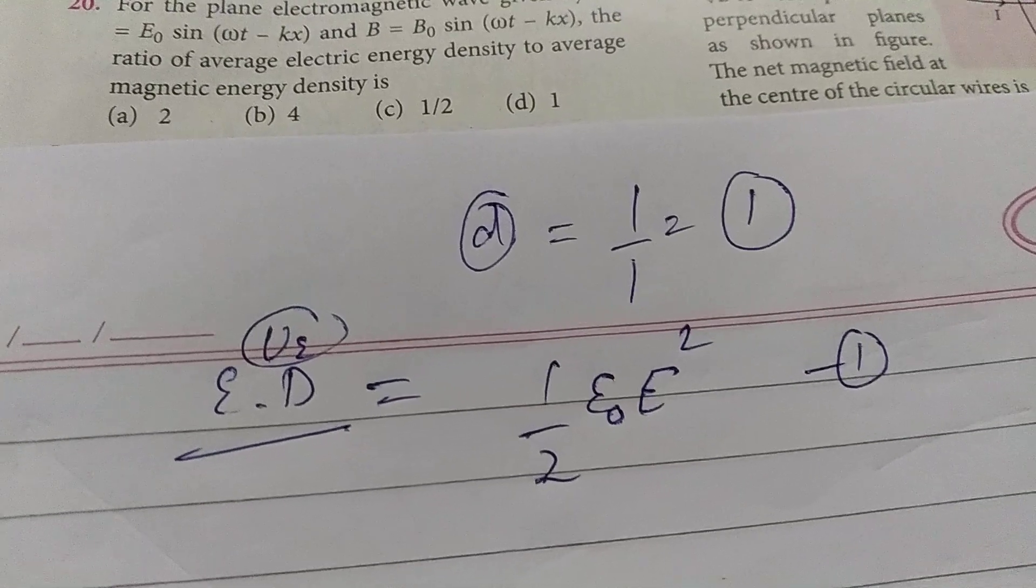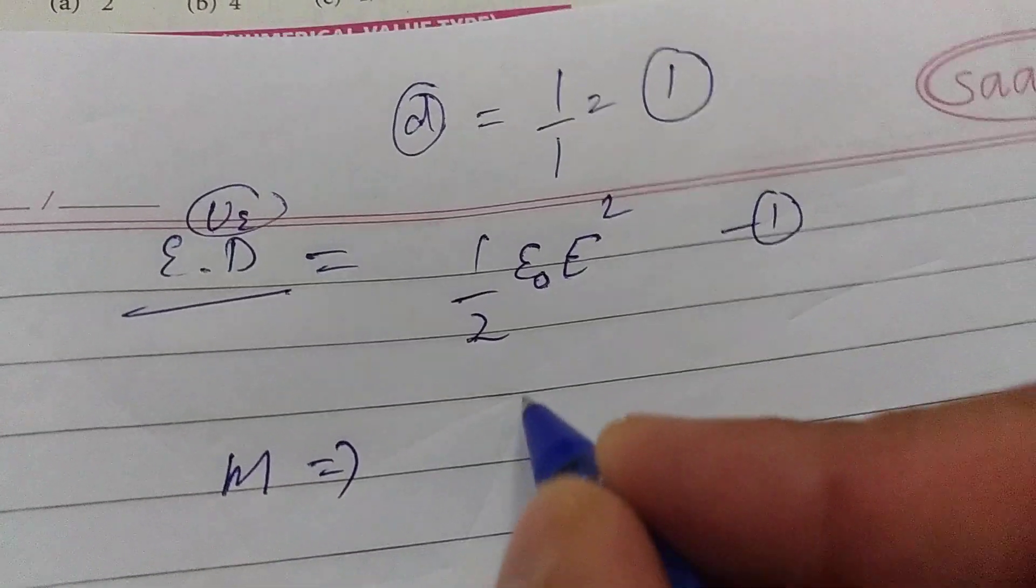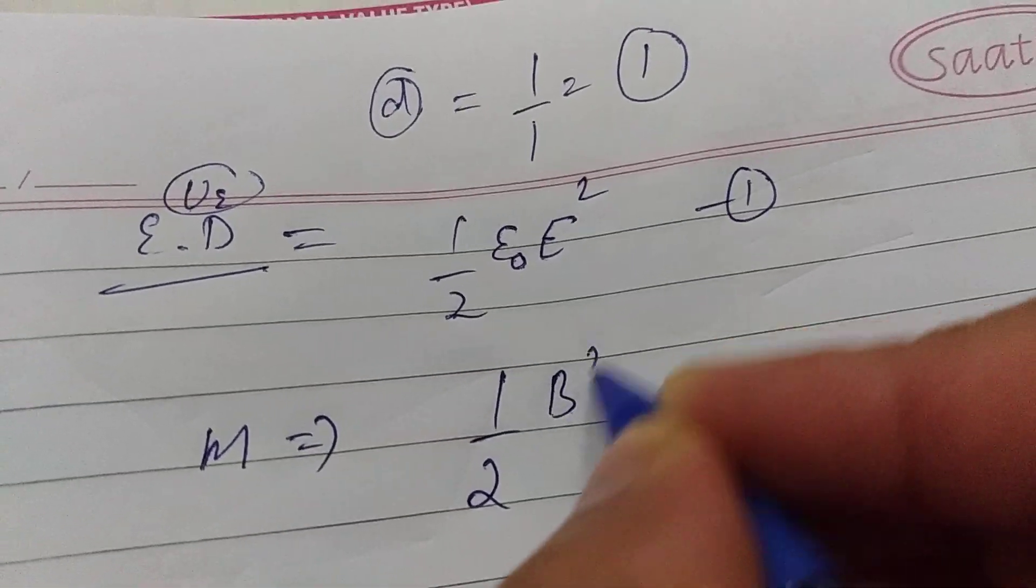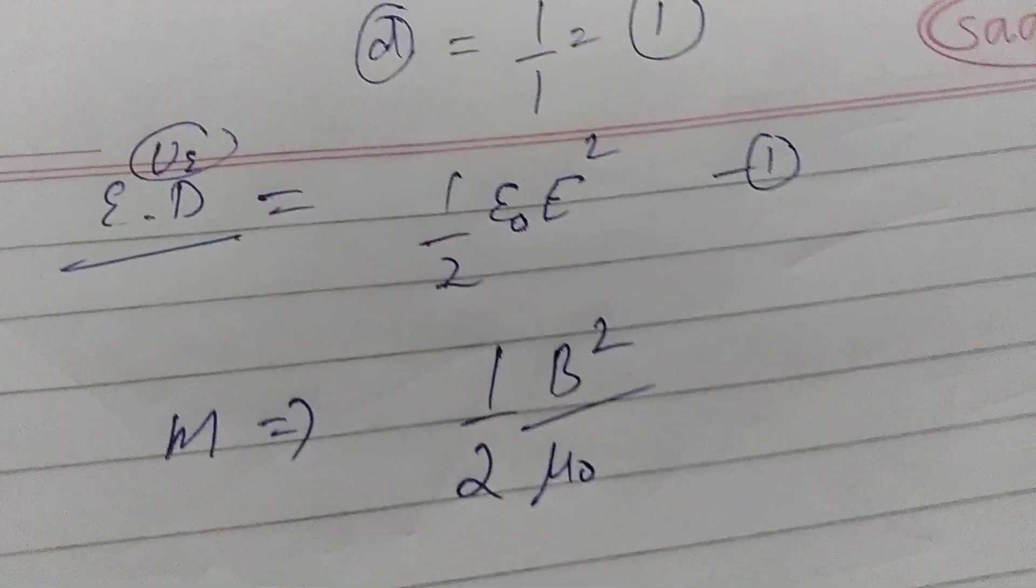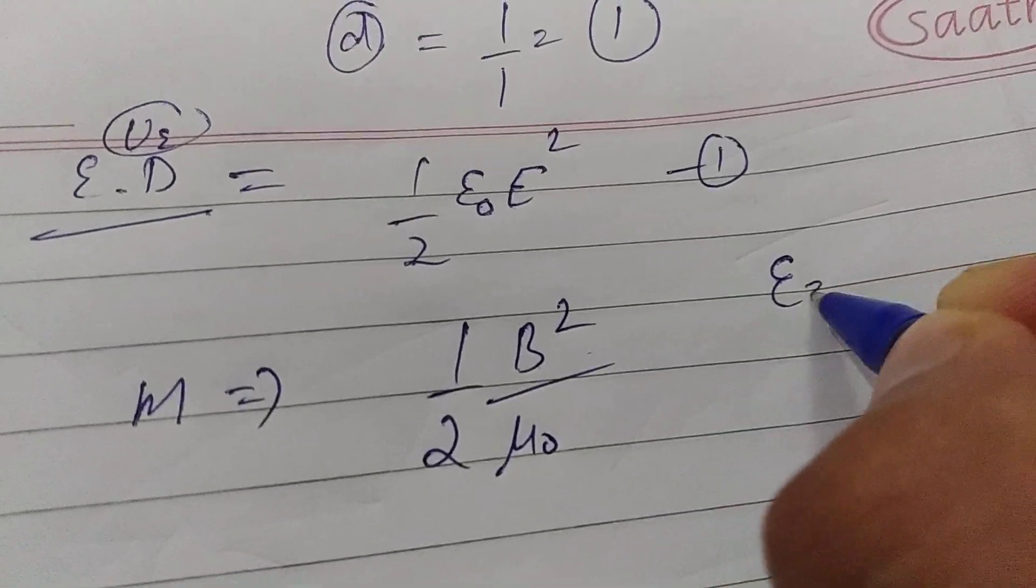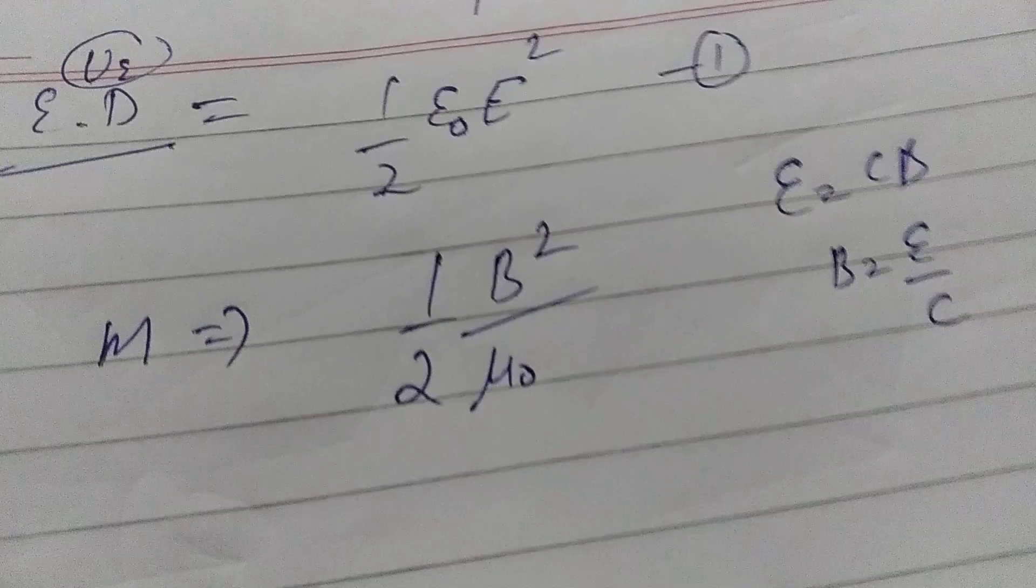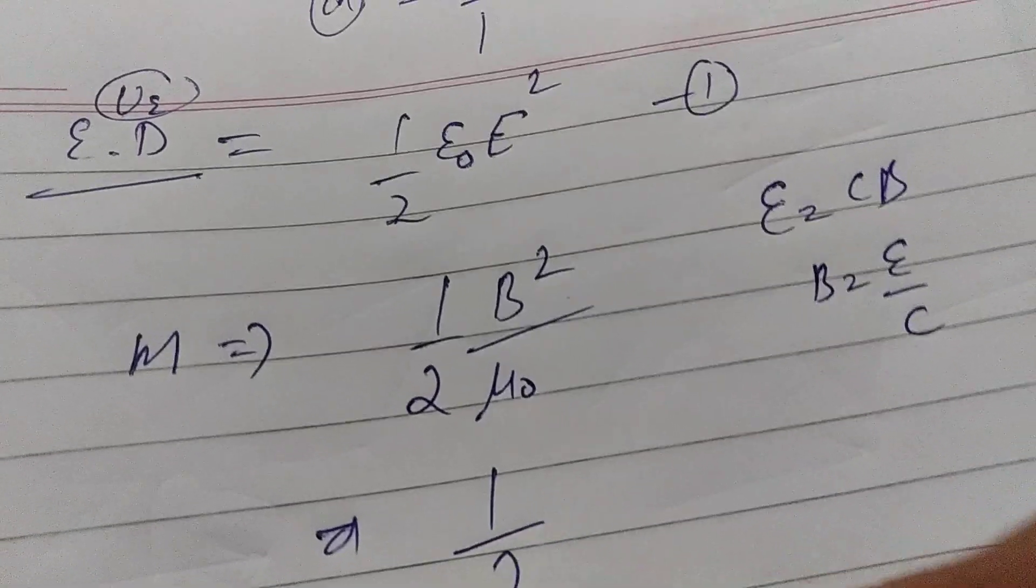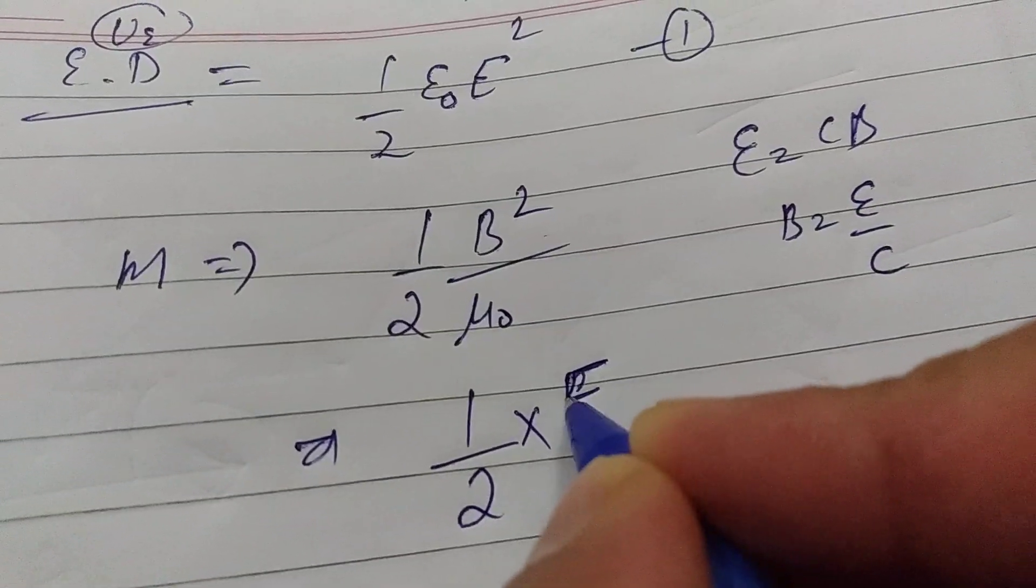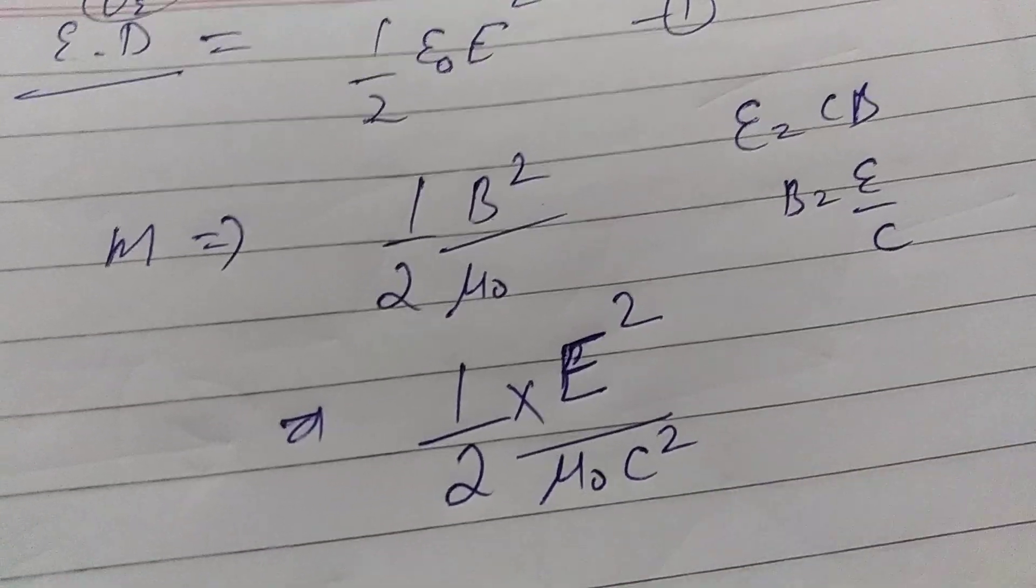And the average magnetic energy density formula is ½B²/μ₀. So you can write this expression - as you know that E equals cB - you can write B as E/c. So the magnetic energy density expression will become ½E²/(c²μ₀).